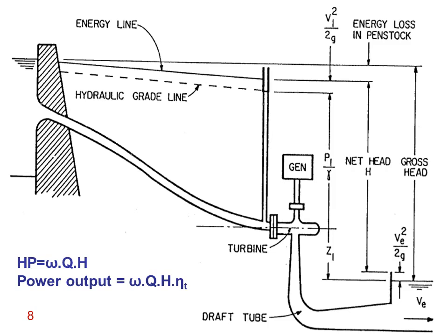Taking the gross head minus losses through the piping system gives you the net head, capital H. Water power equals W multiplied by Q multiplied by H. If you multiply water power by the turbine-generator efficiency, you get the electrical output power. If you multiply only by the turbine efficiency eta, you get the mechanical output power from the turbine.